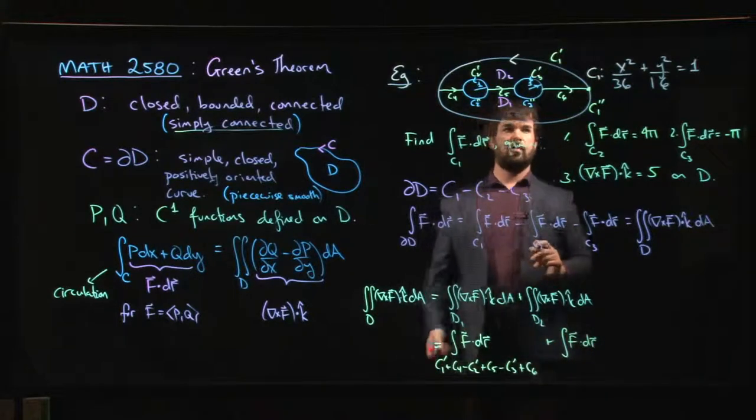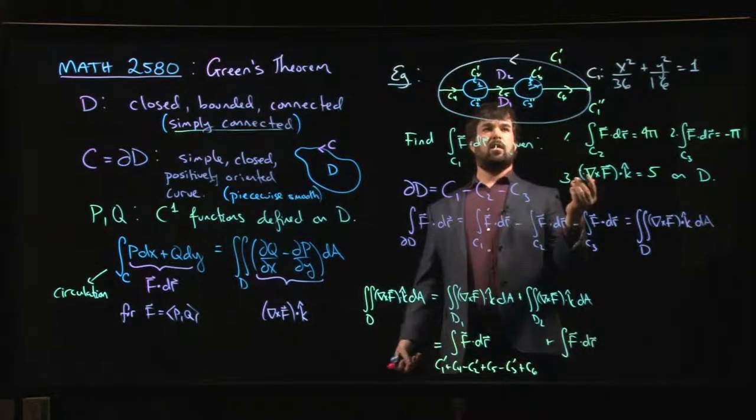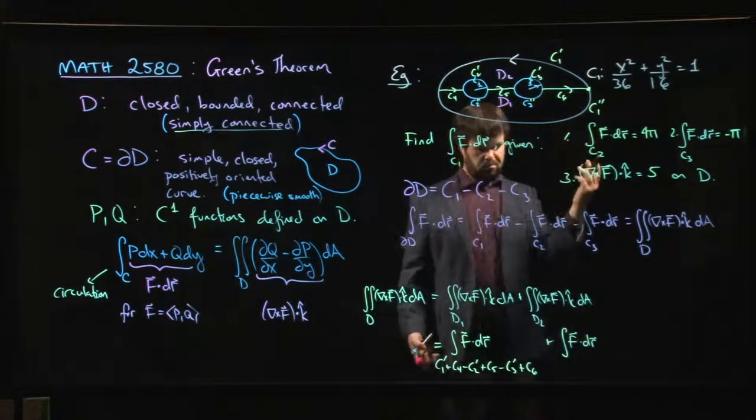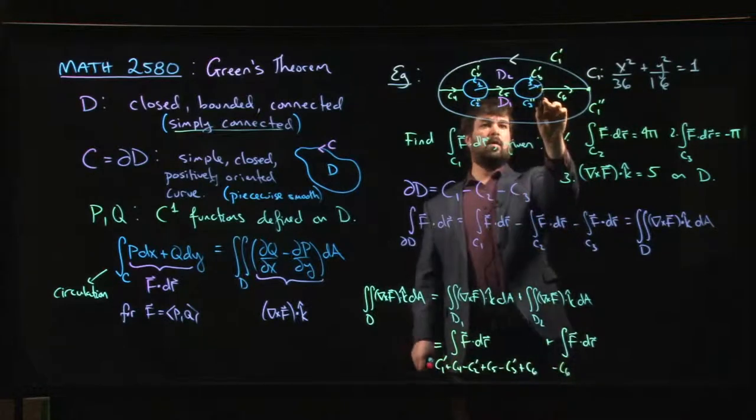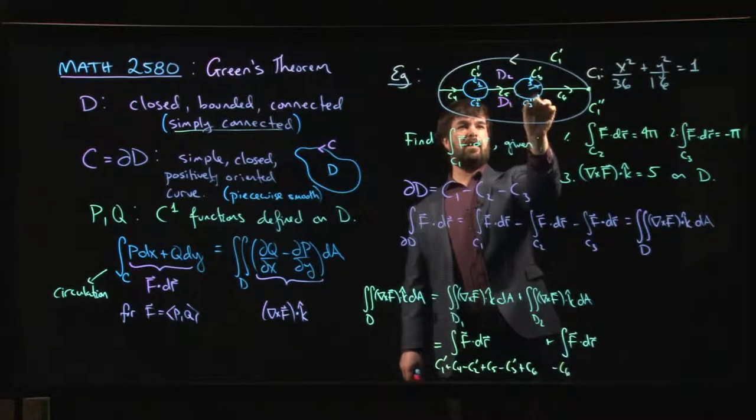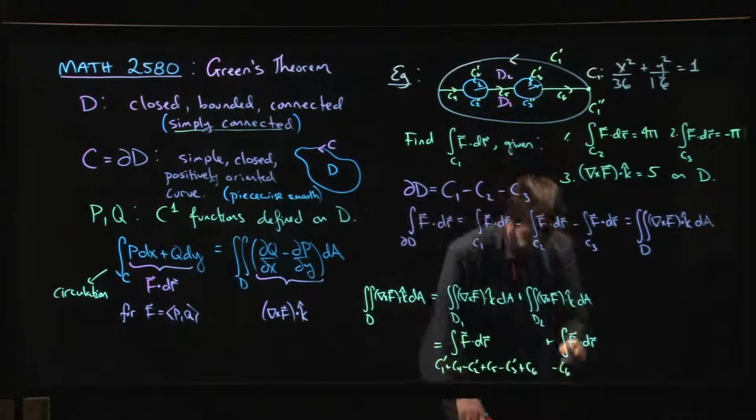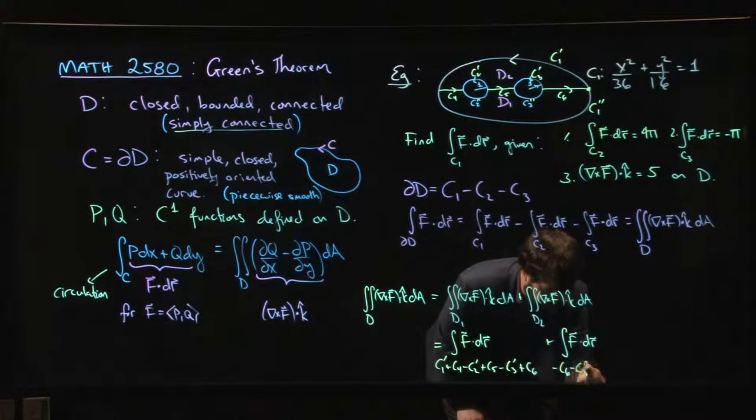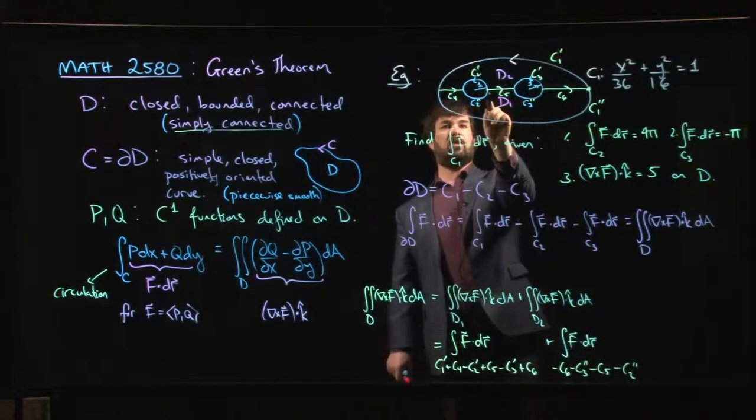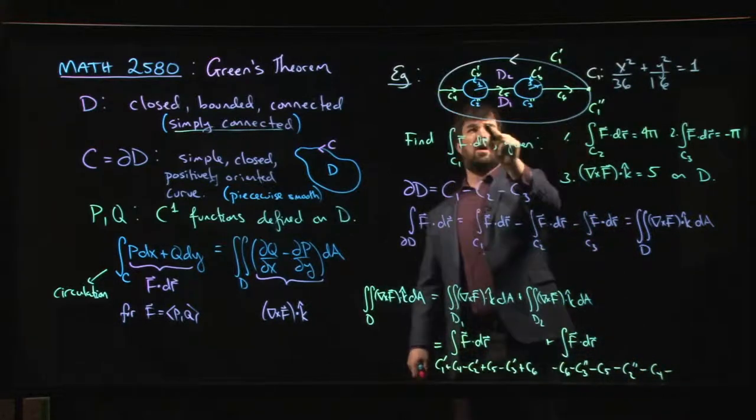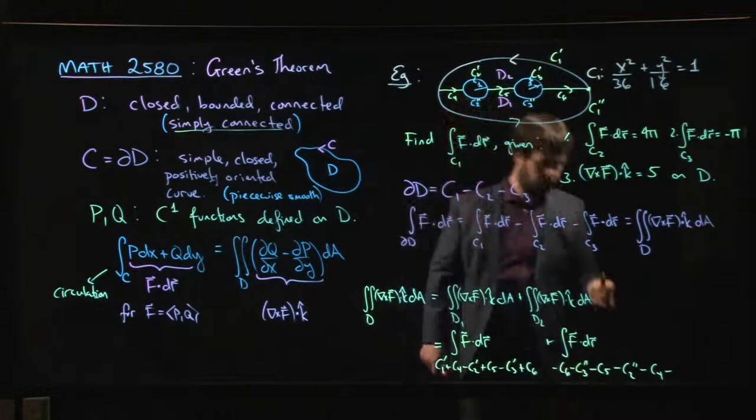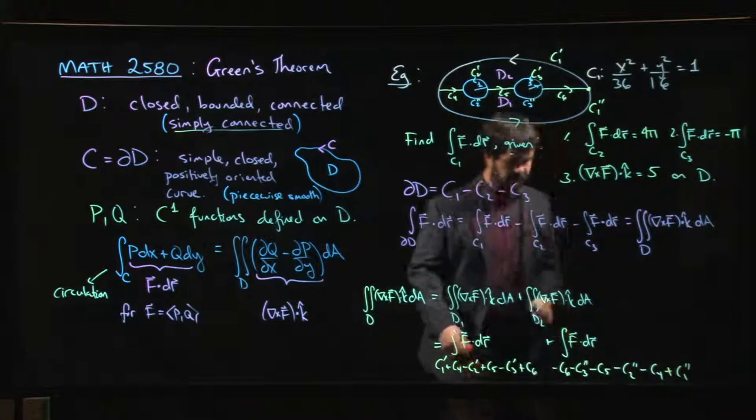And for the other one, my positively oriented boundary is, let's start at the same point and let's go this way. Minus C6. Going around this way, I'm still going the wrong way around that. So minus C3 double prime minus C5 minus C2 double prime, because now I'm going to go the wrong way around that, minus C4. And then here I'm going the right way. Plus C1 double prime.